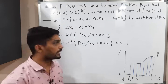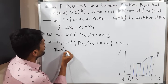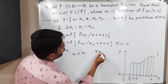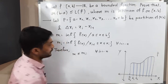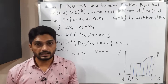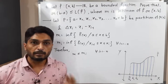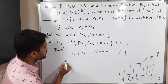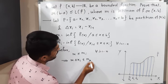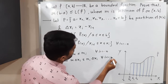Therefore, m ≤ mᵢ for all i from 1 to n. Now we multiply both sides by Δxᵢ. Since Δxᵢ is a non-negative number, the inequality is maintained, giving us m·Δxᵢ ≤ mᵢ·Δxᵢ, for all i from 1 to n.